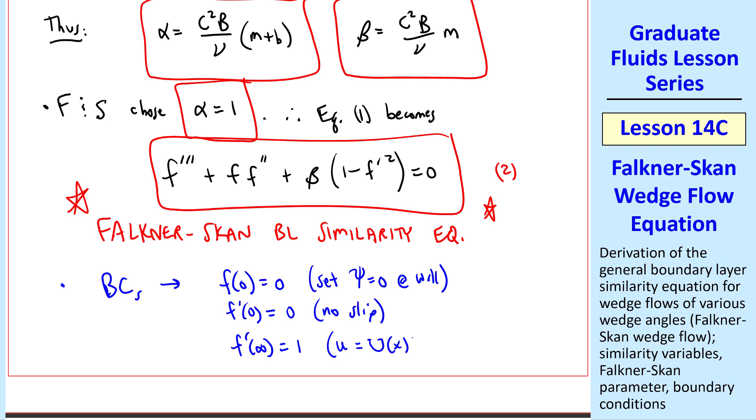And then f prime of infinity equals 1, which comes from u going to U of x at the edge of the boundary layer out at infinity. And these are also identical to those of the Blasius boundary layer.